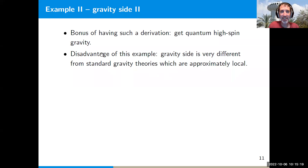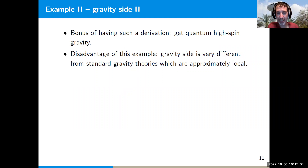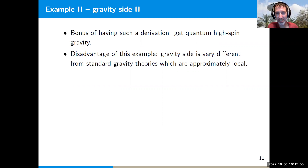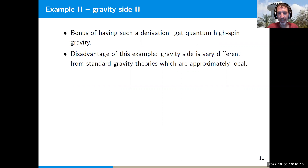As a bonus, in addition to deriving the AdS/CFT correspondence, if we can construct such a mapping it will also by construction give us a quantum high-spin gravity theory — presumably the unique quantum high-spin gravity theory dual to these U(N) vector models. Of course this example has a disadvantage compared to the previous case: the gravity side is very different from standard gravity theories, having all these massless high-spin fields in addition to the graviton and no locality at the AdS scale. But the hope is that understanding the mapping in this toy model will still teach us something about more general cases.